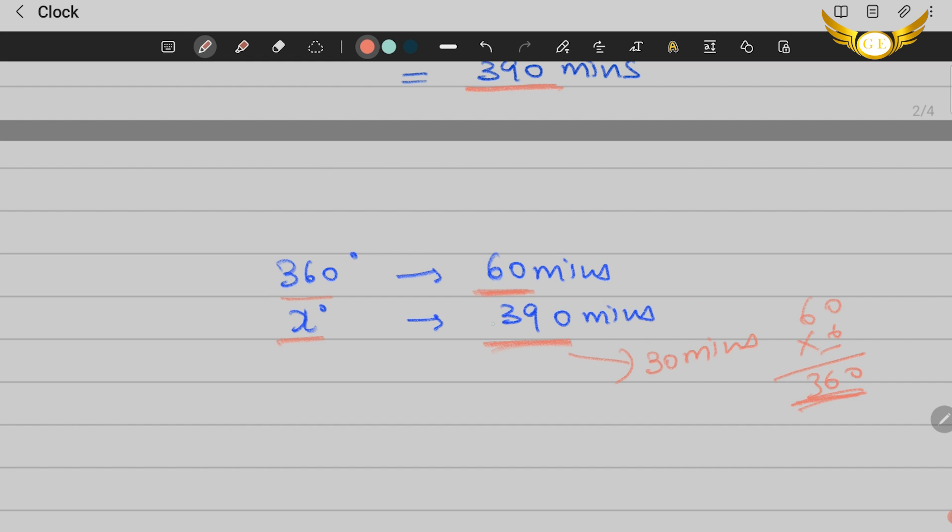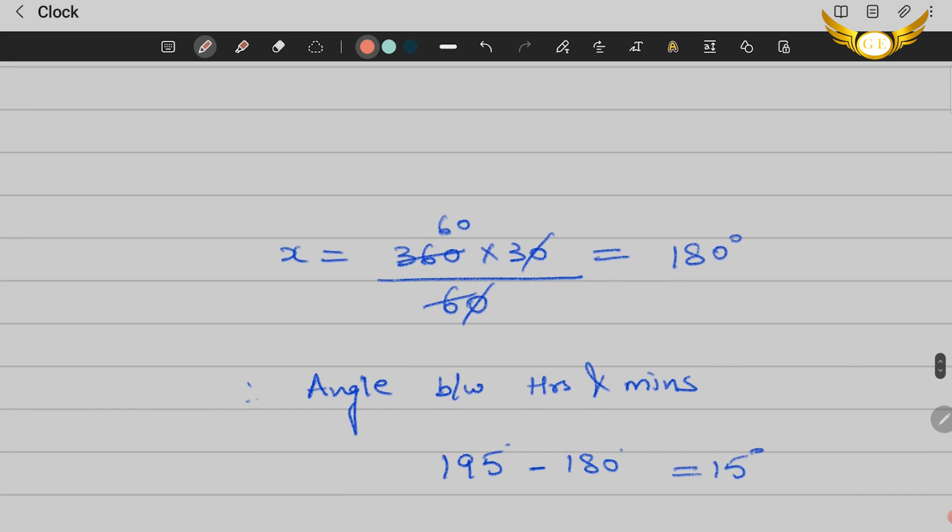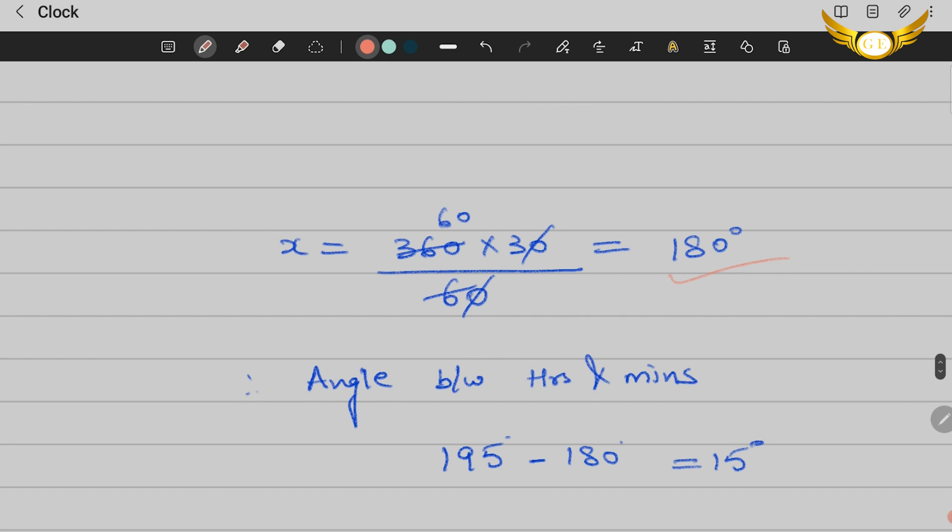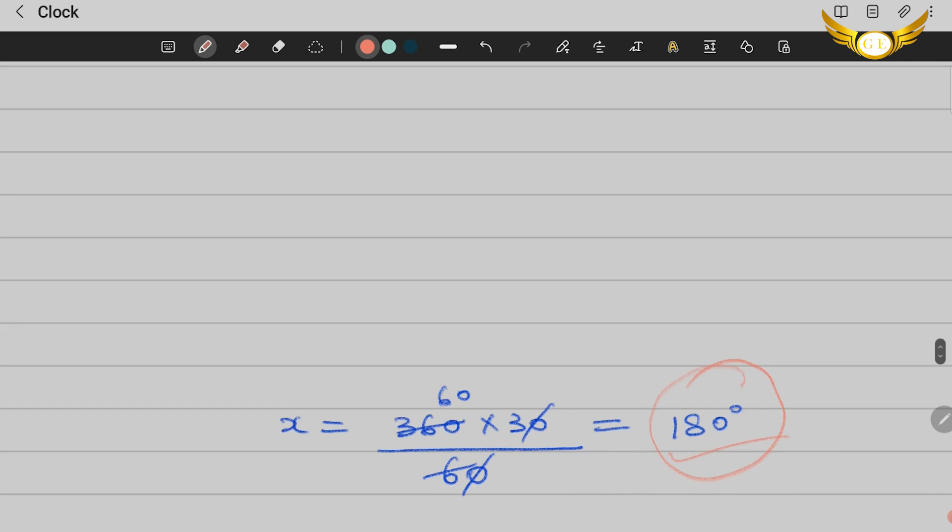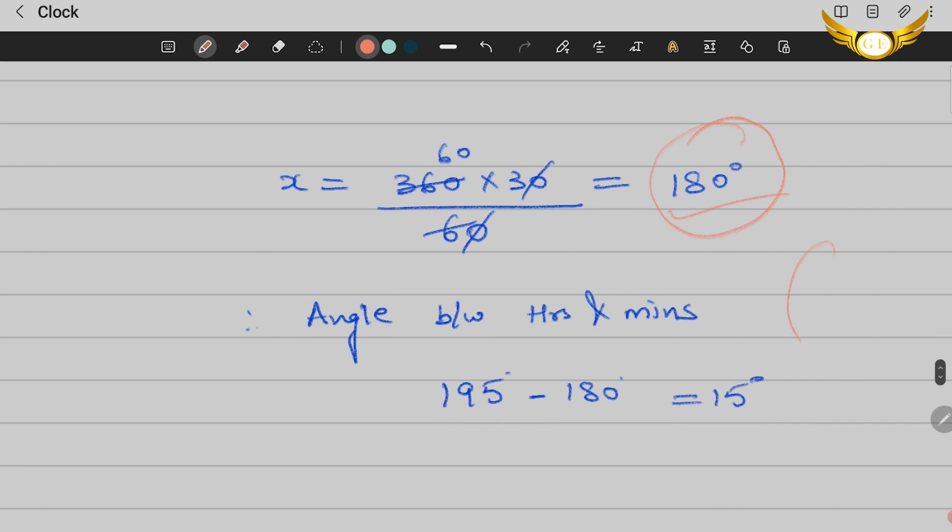We cross multiply: 360 into 30 by 60. This gives 180 degrees, which means the minute handle will give you an angle of 180 degrees in 30 minutes.